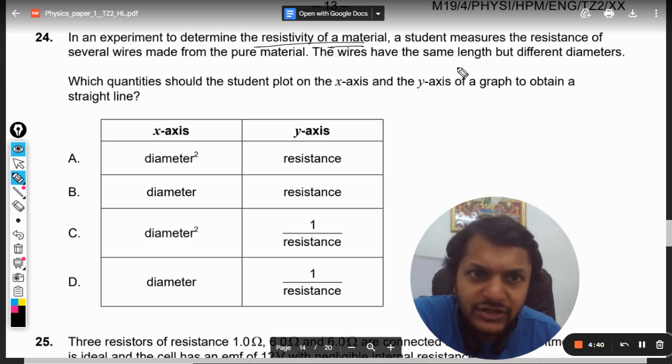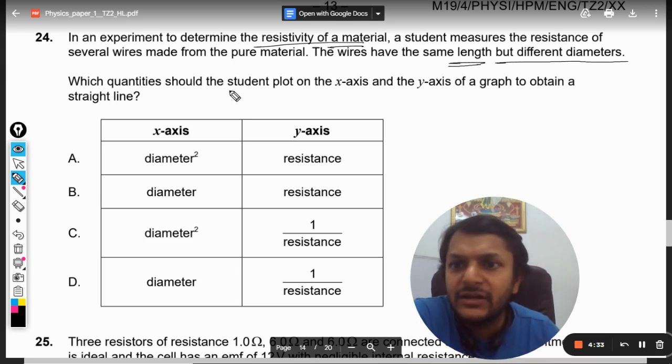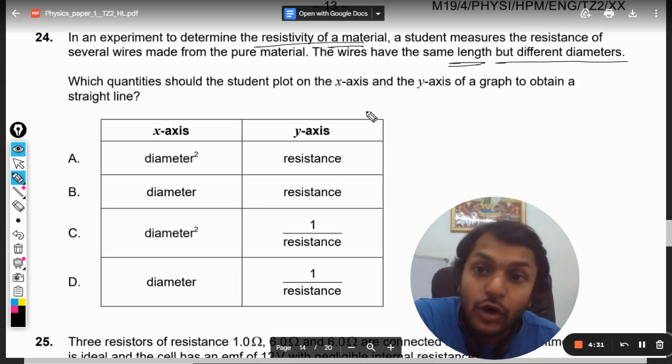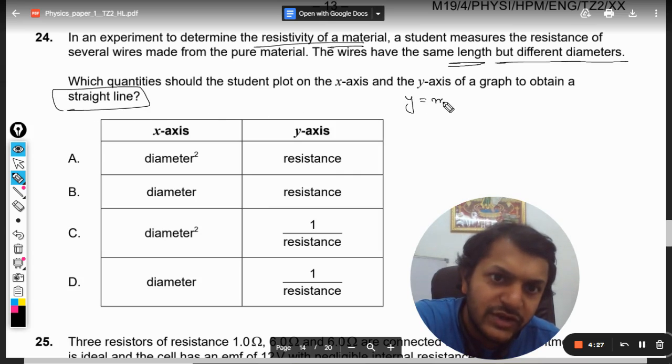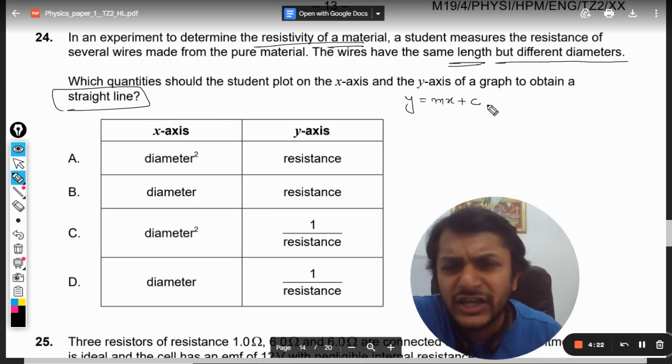The diameter is different but length is the same. Which quantity should the student plot on the x and y axis to obtain a straight line? We want a graph that follows y = mx + c.